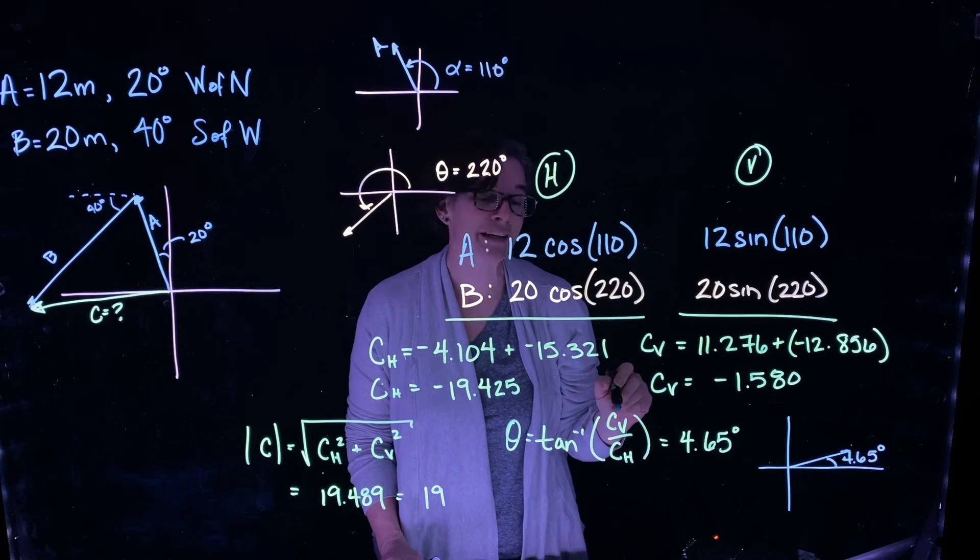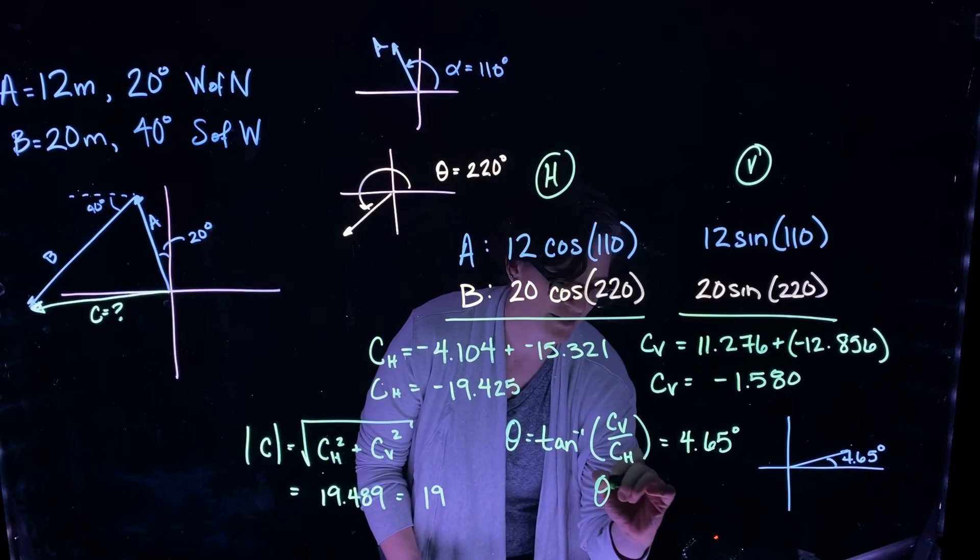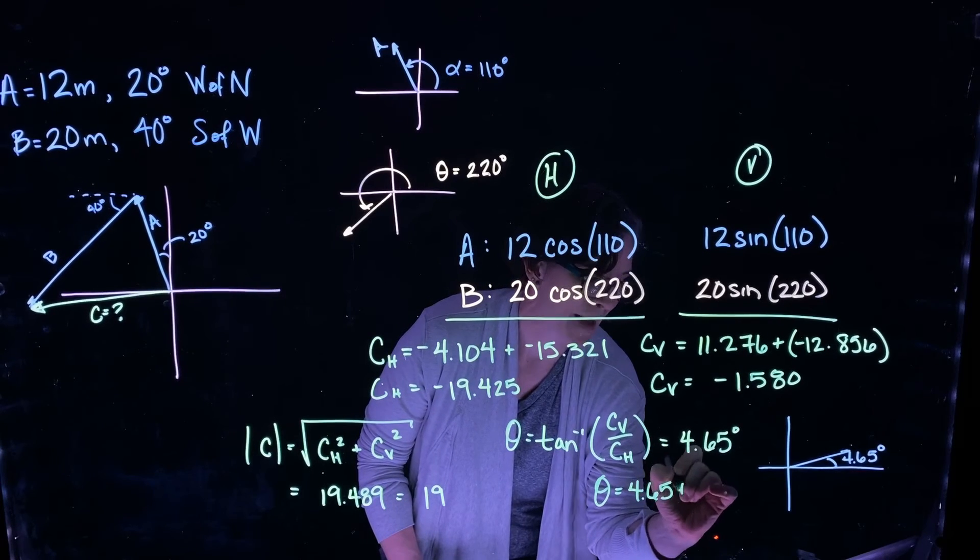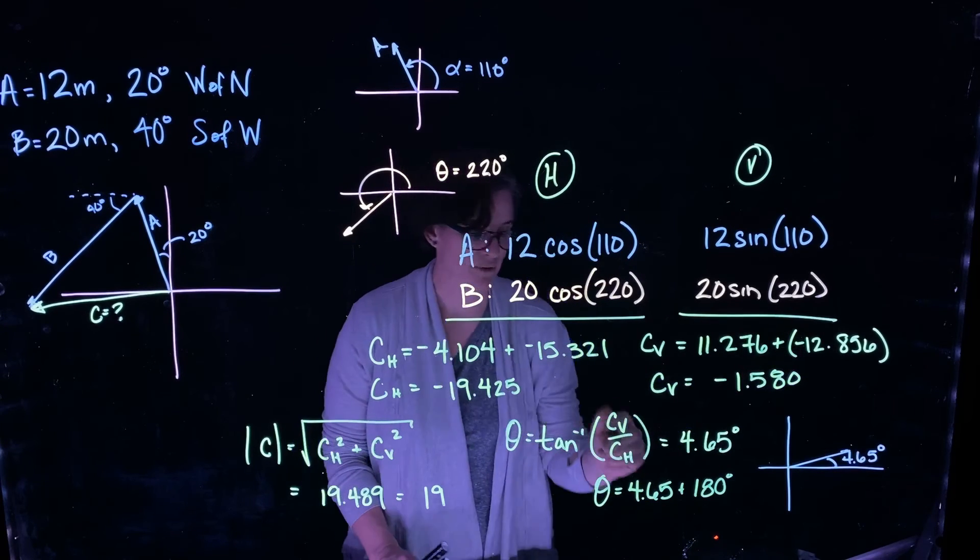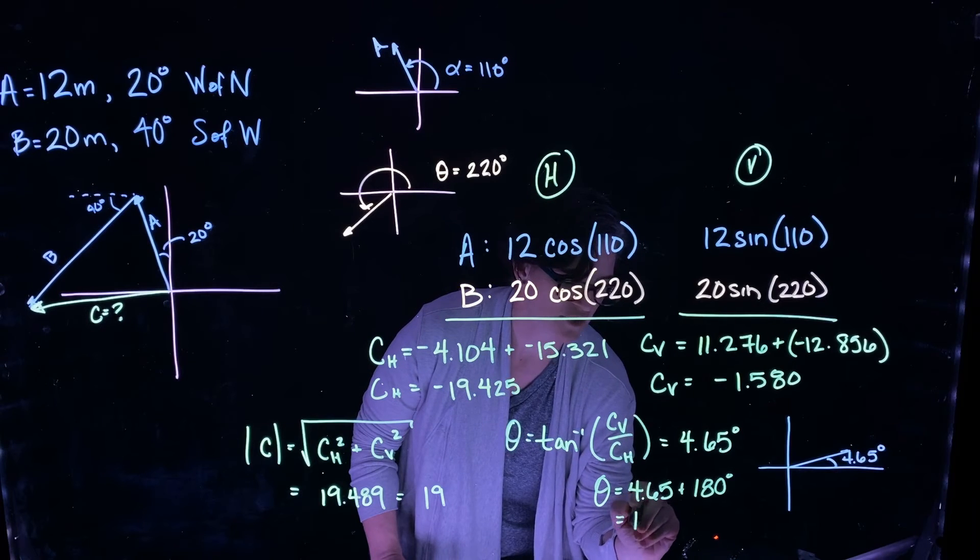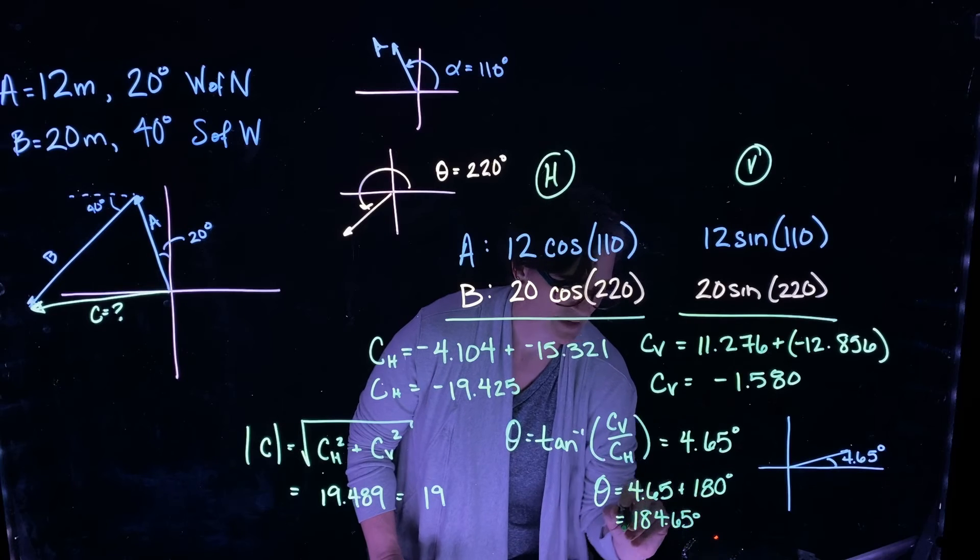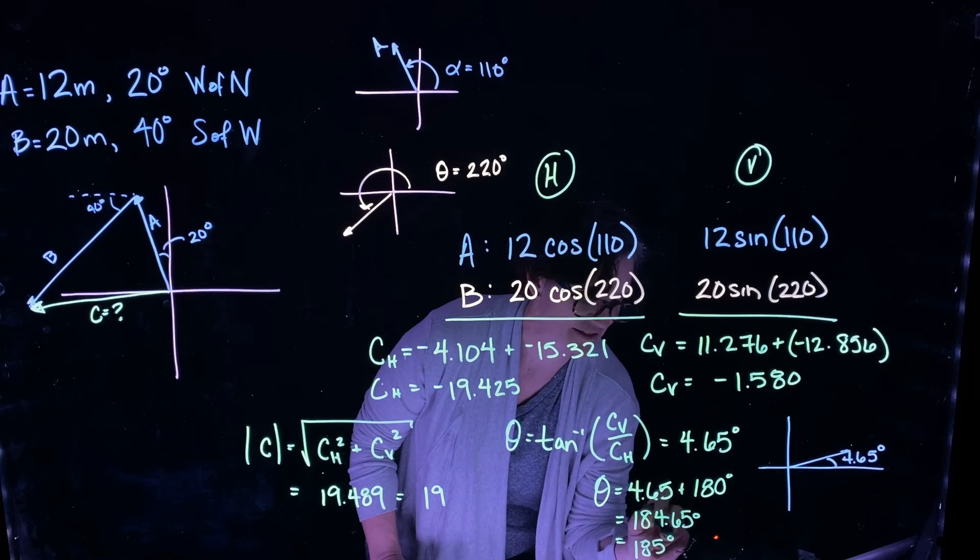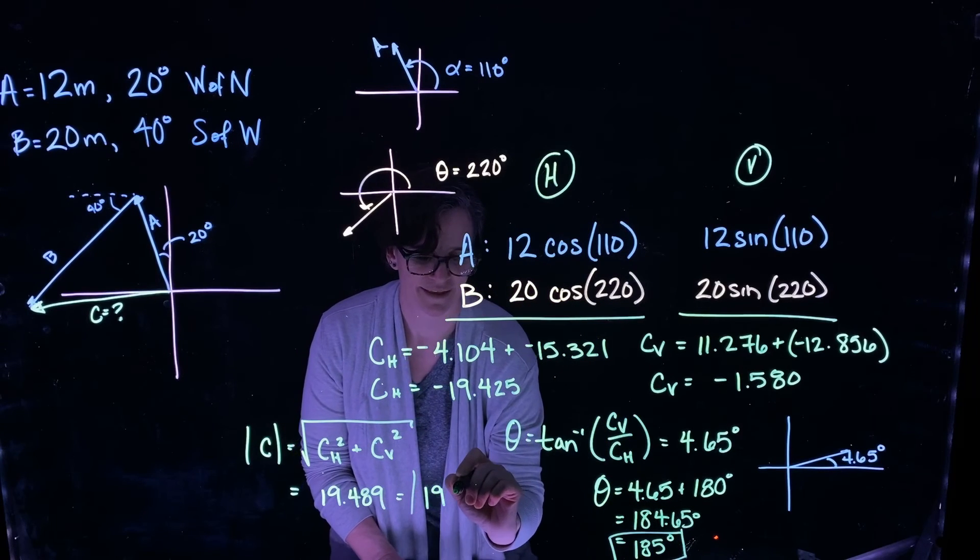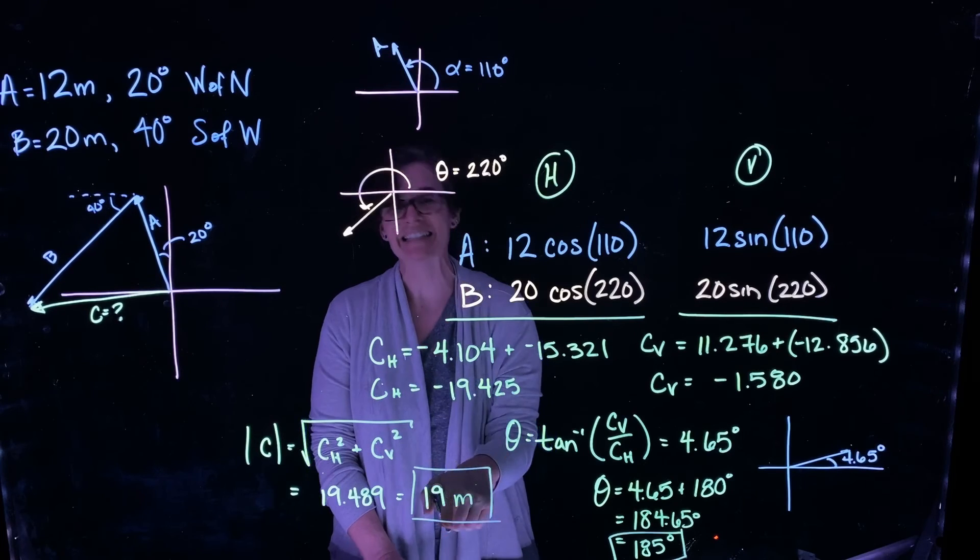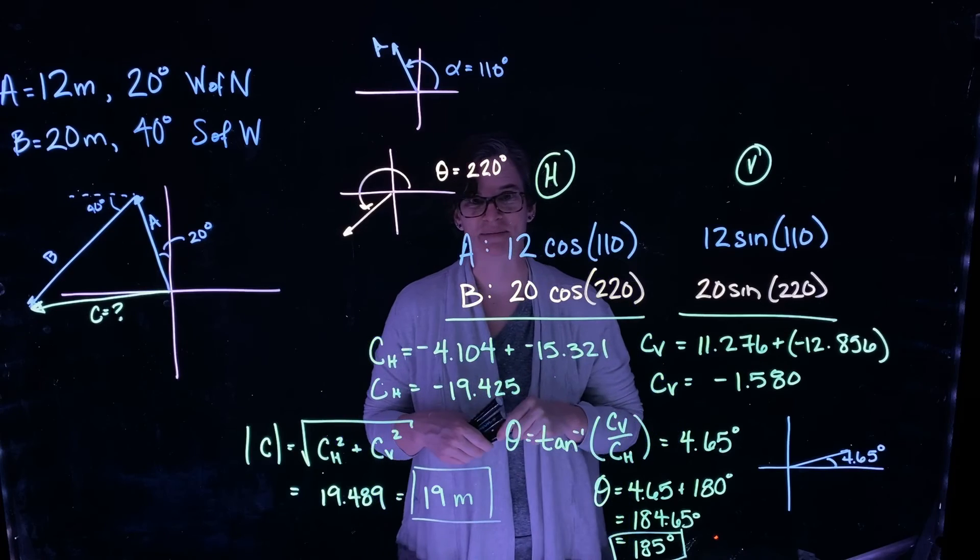So to get the appropriate angle, I add 180 degrees. So my angle is going to be 4.65 plus 180 degrees, since it needs to point in the opposite direction, which tells me the angle is 184.65 degrees, which I'm going to round to 185 degrees. Alright, so my magnitude, this is in meters, my magnitude is 19 meters, headed in the direction of 185 degrees.